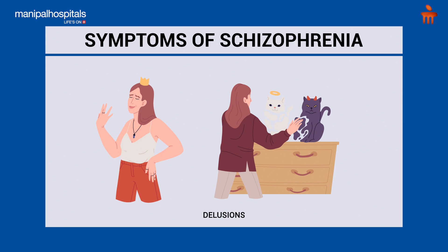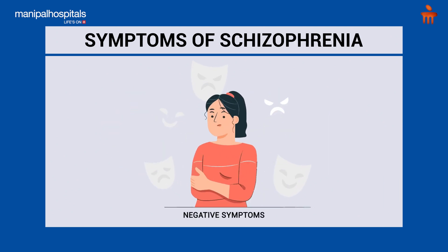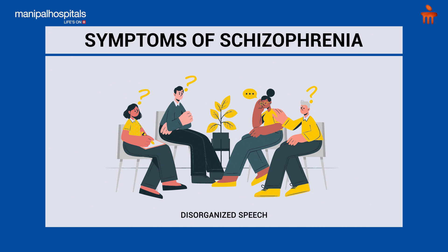Third, they have negative symptoms — that is, there is loss of reactivity, loss of expressions, decreased cognition, decreased attention and alertness, so they slow down very much in their day-to-day activity. Fourth is disorganized speech, meaning there is no connection between two sentences and it is very difficult to comprehend what they are trying to tell us.